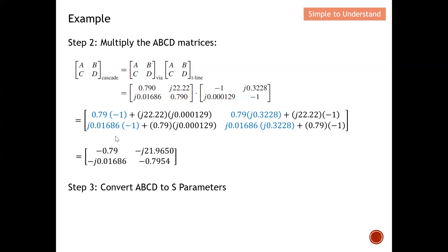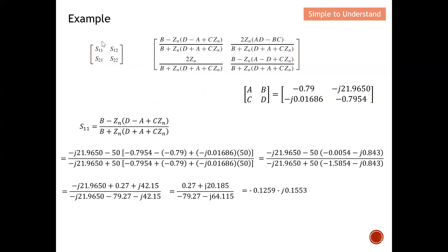This gives the overall ABCD parameters for the cascade of the via and transmission line. In Step 3, I will show how to convert these ABCD parameters back to S-parameters. These are the conversion equations. Earlier I showed how to convert S-parameters to ABCD parameters; now I will show how to convert ABCD parameters back into S-parameters — giving the final result for the via and transmission line cascaded together.